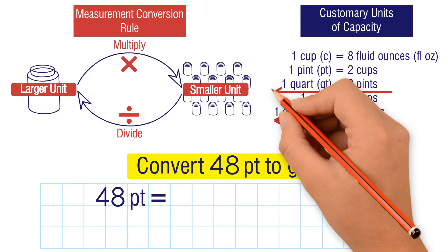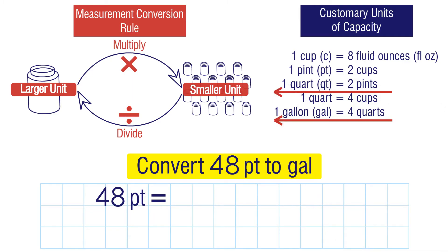First, let's convert pints to quarts. We're going from smaller units to larger units, so we need to divide. One quart is equal to two pints, so we divide 48 by 2 to get 24 quarts.